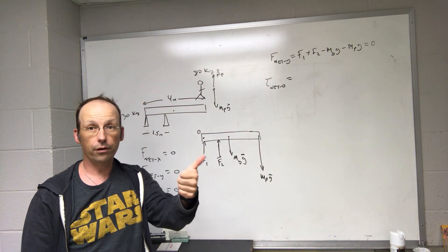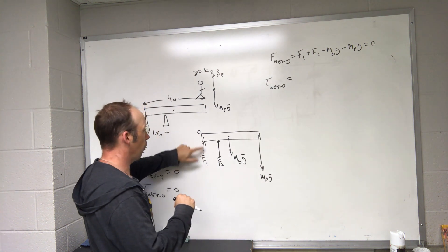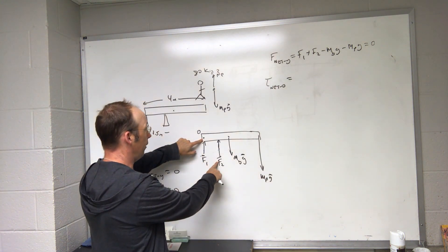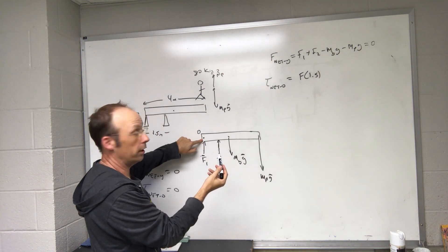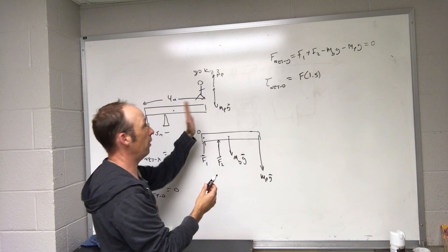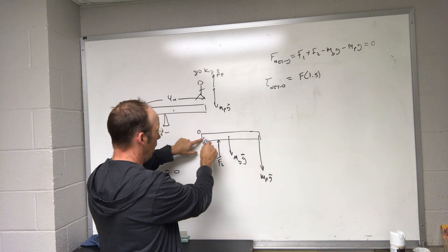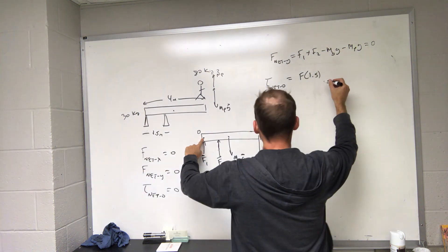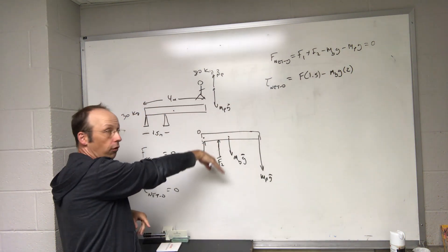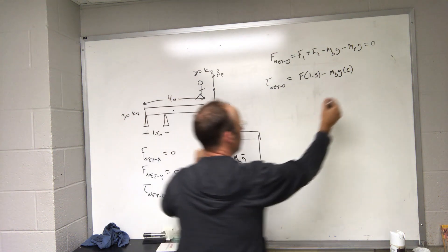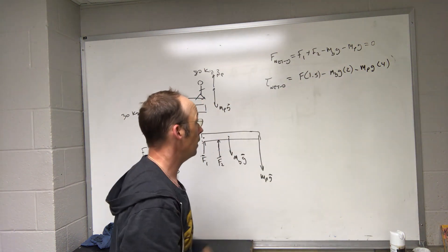So torque net O. Remember, torque is the force times the distance from the point to the force times the angle between those two. So let's deal with this first one. The torque is zero because the distance is zero. So now the next one, it's going to be F2 times 1.5 times the sine of 90, which is one. And that's going to be a positive torque because this would make it rotate counterclockwise. This next one is going to be Mb G times the length from here to there, which is two meters. And that's going to be negative, negative Mb G times two. It's negative because it would make it rotate clockwise, which is a negative torque. And then finally, I have this one minus Mp G times four. And that has to be equal to zero.